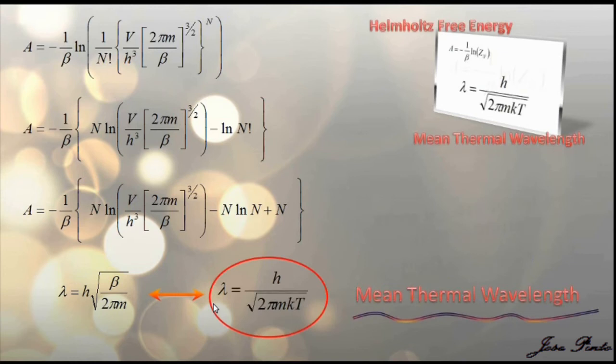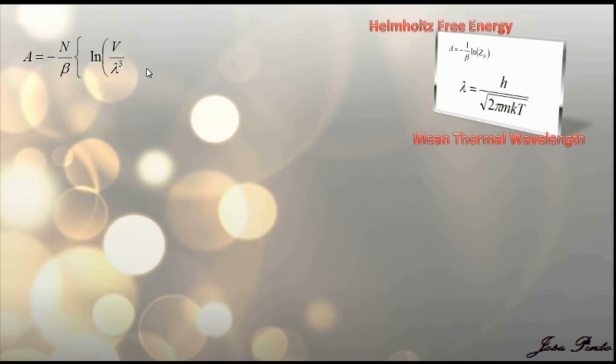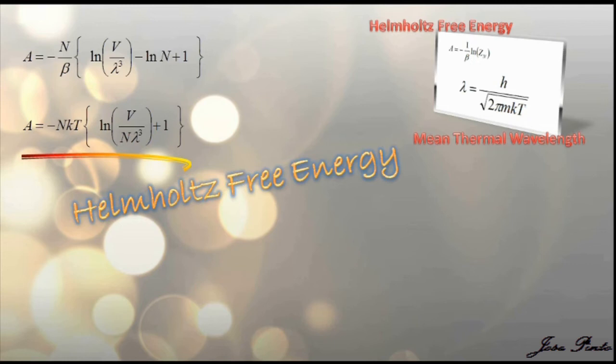This is known as the mean thermal wavelength. You might recognize it if I write it like this. Then the Helmholtz free energy is just this. And ln of this minus ln of that is just ln of this divided by that. And that's it. You're done.